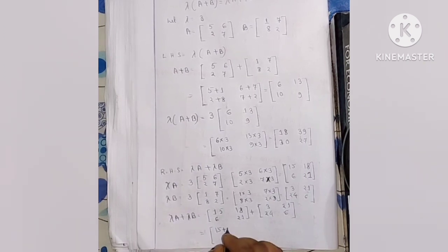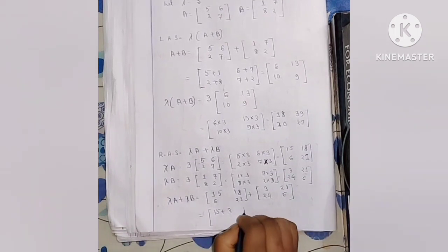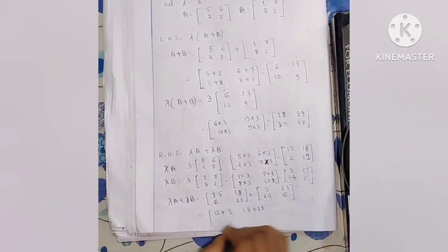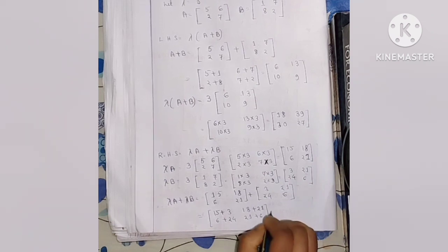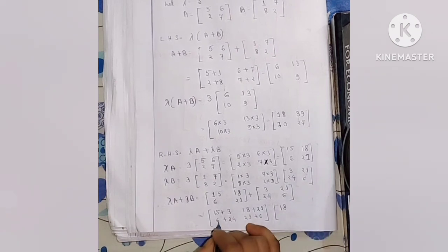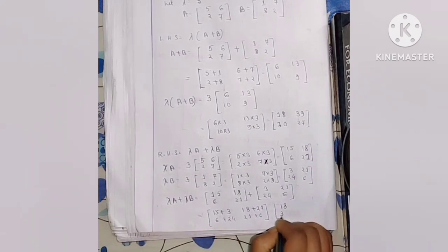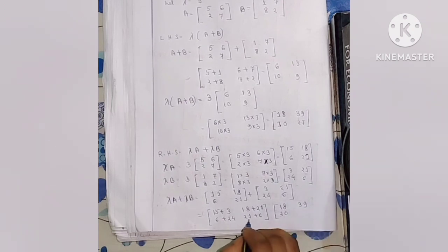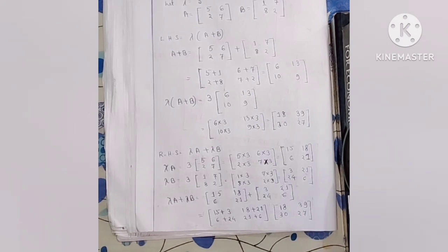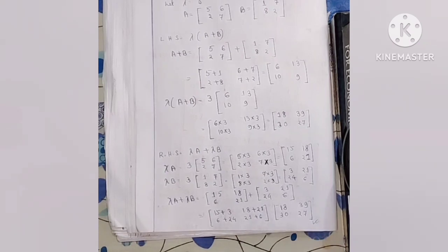Adding lambda A plus lambda B: 15 plus 3 equals 18; 18 plus 21 equals 39; 6 plus 24 equals 30; 21 plus 6 equals 27. So the right-hand side matrix is [18, 39; 30, 27]. The right-hand side matrix equals [18, 39; 30, 27], which matches our left-hand side. Therefore, left-hand side equals right-hand side, and the equation is proved.